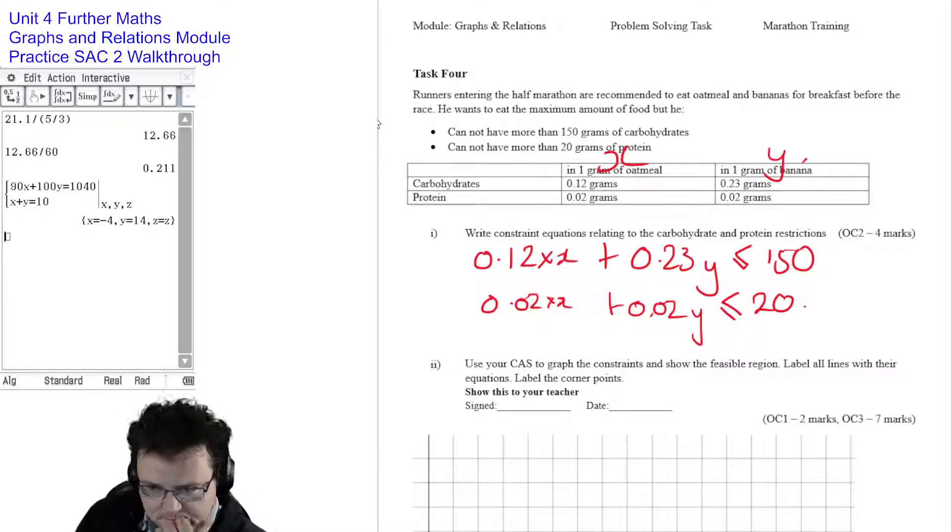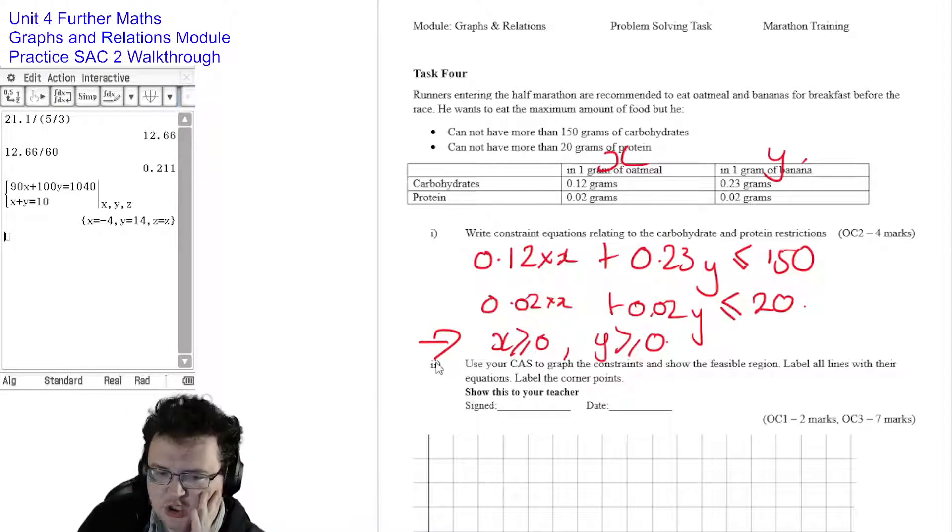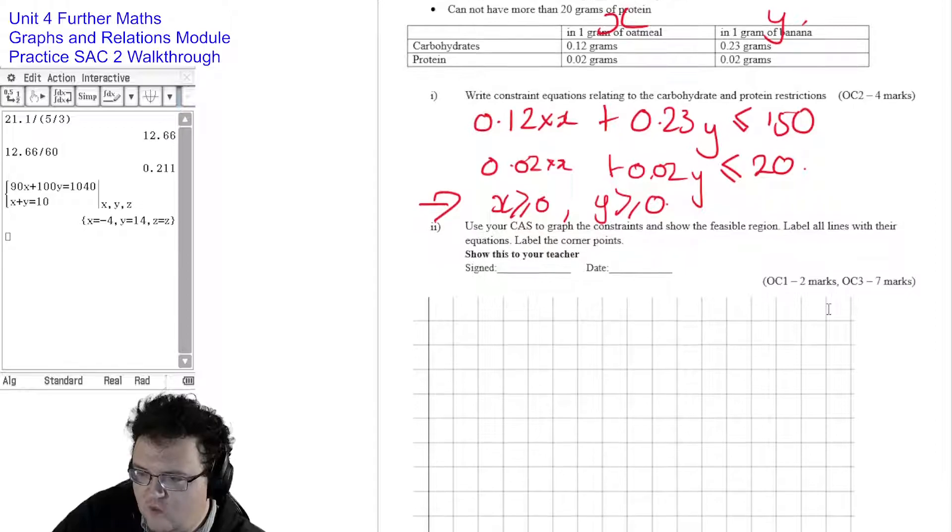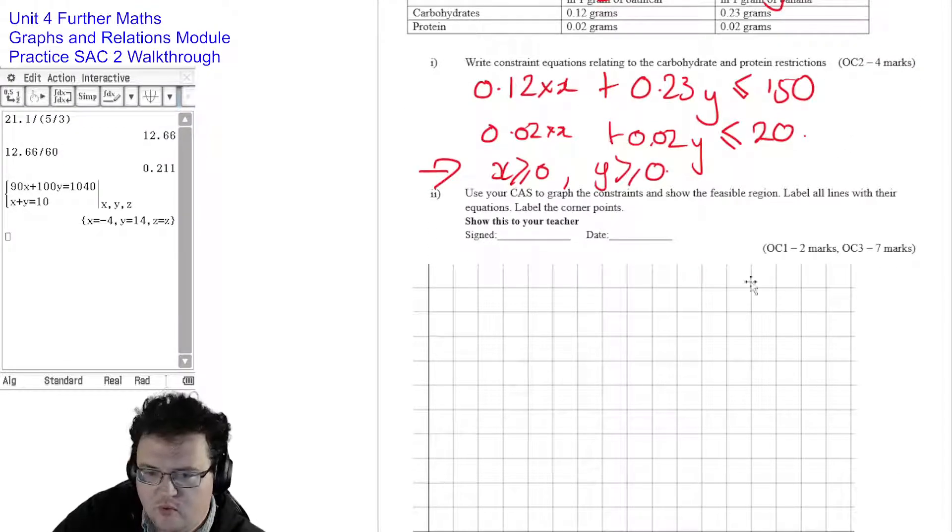Now obviously, he can't eat a negative amount of food. So X must be greater than or equal to 0, and Y must also be greater than or equal to 0. When you're talking about constraint equations, they should go in automatically. If they haven't already said a minimum number, assume you're working in a positive number space. Use your CAS to graph the constraints and show the feasible region. Label all lines with their equations. Label the corner points.